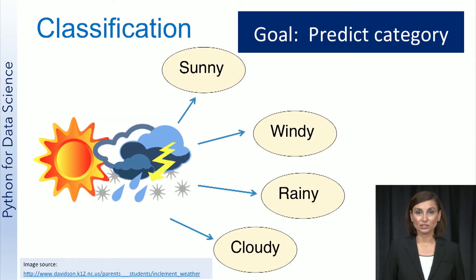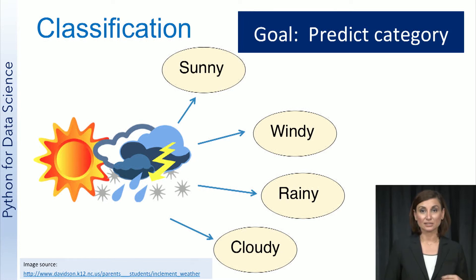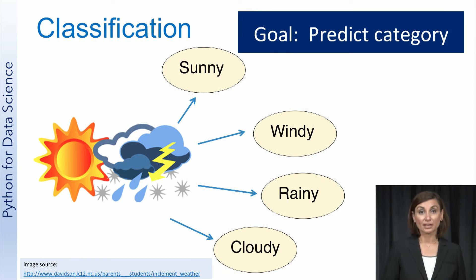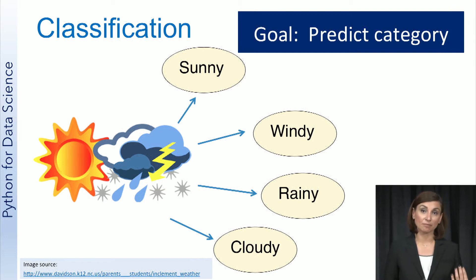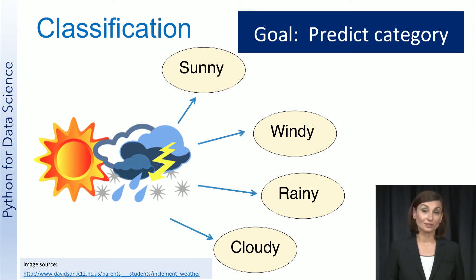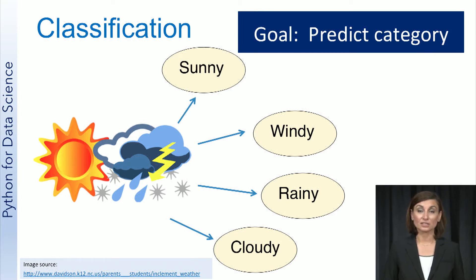In classification, the goal is to predict the category of the input data. An example of this is predicting the weather as being sunny, rainy, windy, or cloudy. The input data in this case would be sensor data specifying the temperature, relative humidity, atmospheric pressure, wind speed, wind direction, et cetera. The target, or what you're trying to predict, would be the different weather categories like sunny, windy, rainy, and cloudy.